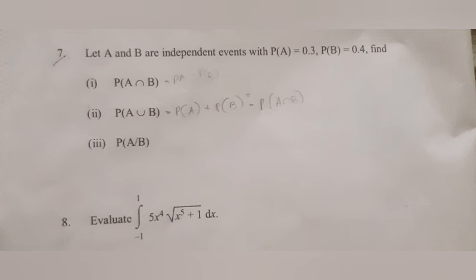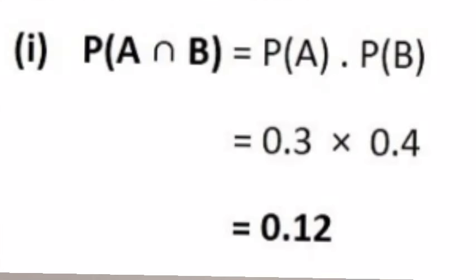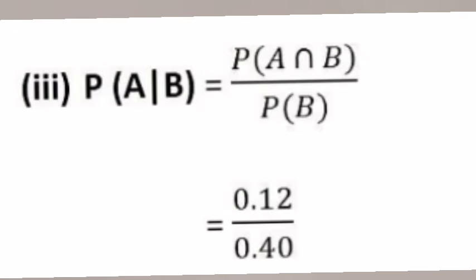Problem 7: Let A and B be independent events with P(A) = 0.3, P(B) = 0.4. Find: (1) P(A∩B) = P(A)·P(B) = 0.3 × 0.4 = 0.12. (2) P(A∪B) = P(A) + P(B) - P(A∩B) = 0.3 + 0.4 - 0.12 = 0.58. (3) P(A|B) = P(A∩B)/P(B) = 0.12/0.40 = 0.3.